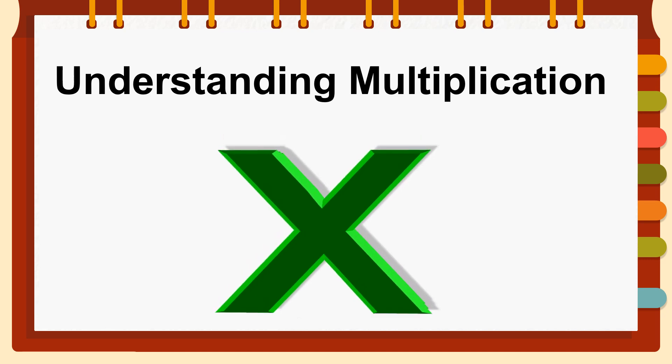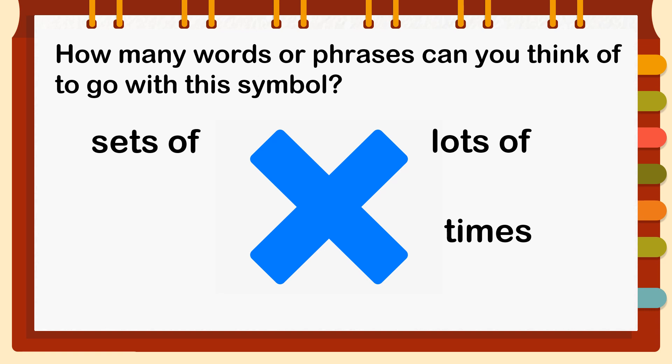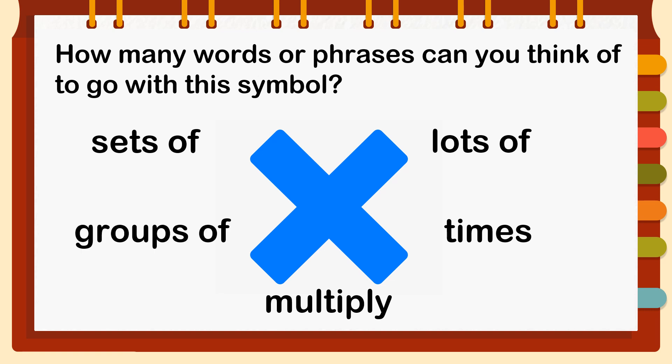This is why sometimes it is called times. Now pause the video and have a go at this question: how many words or phrases can you think of to go with this symbol? We all are familiar with this symbol, but we have different names for it when it comes to multiplication. It is sometimes called times, lots of, sets of, multiply, and also groups of.